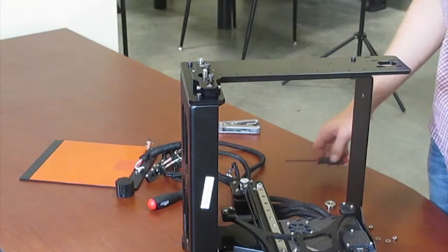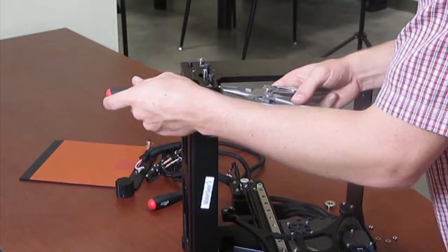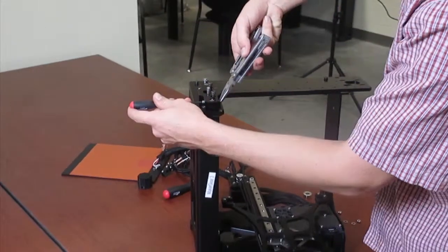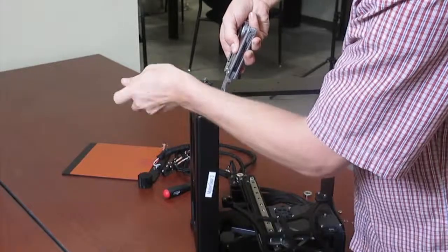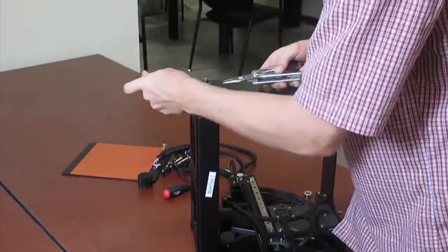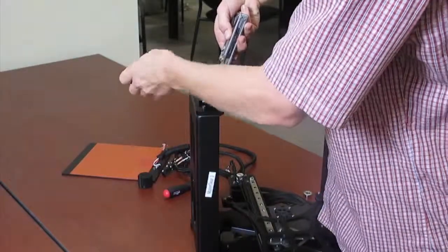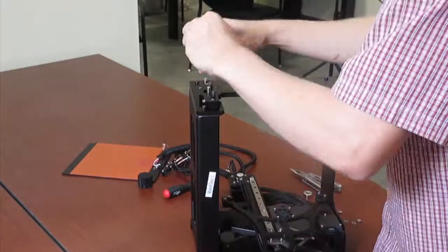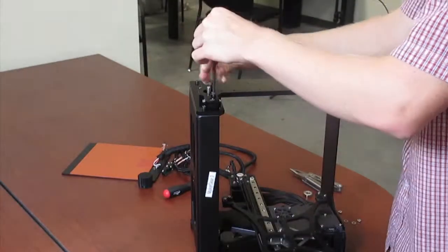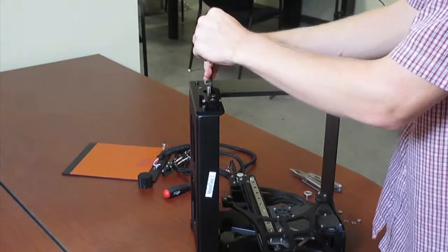Once your smooth rods are in place, you can go ahead and tighten the top clamps. This will keep your smooth rods in exactly the spot where they are now. After doing this, you can go back and tighten those black bolts you put in a minute ago.